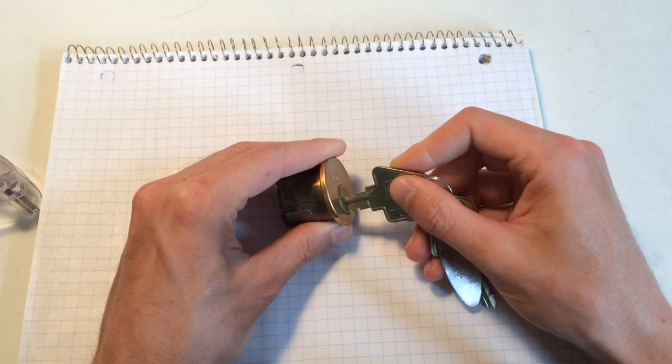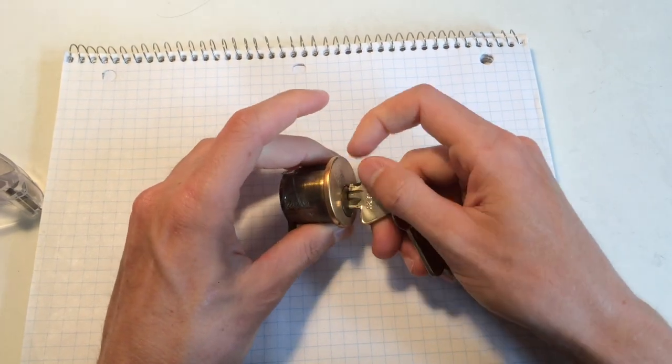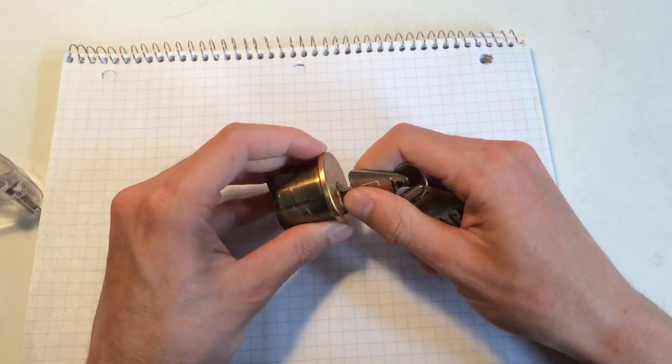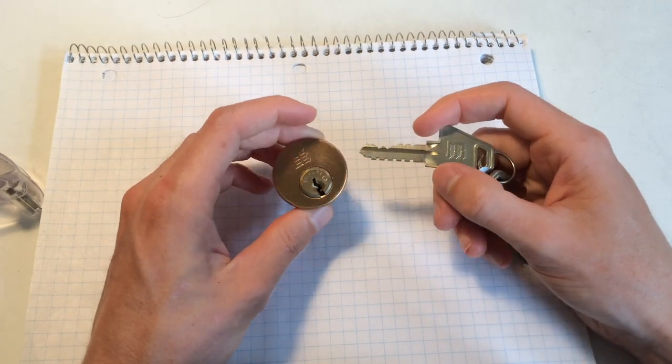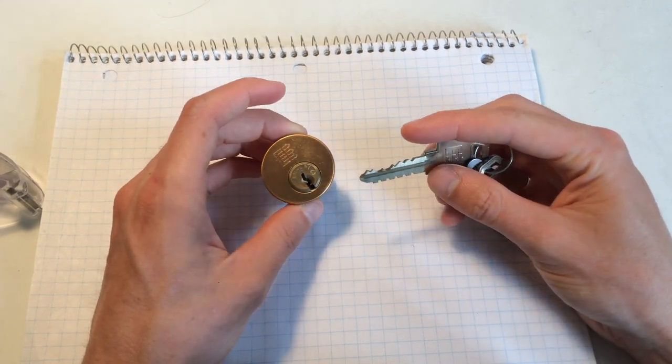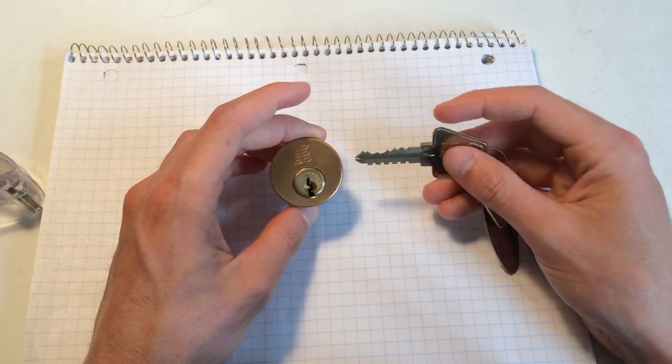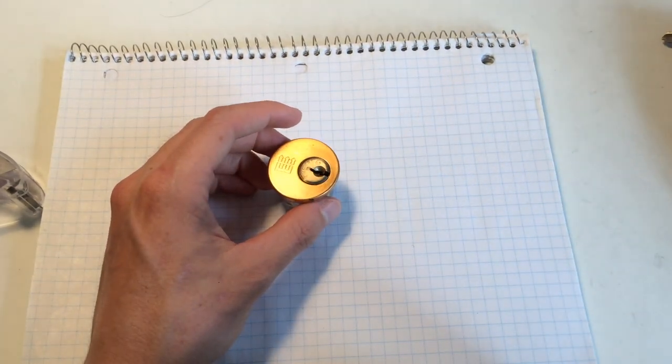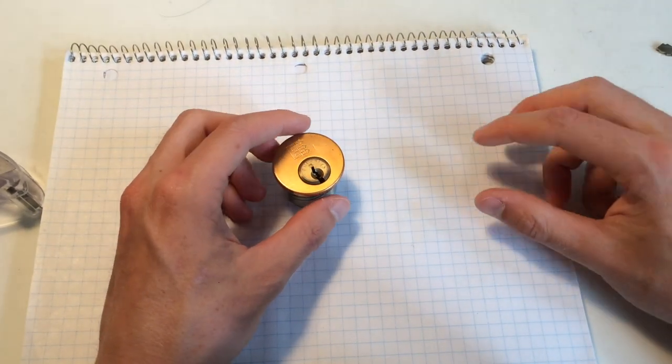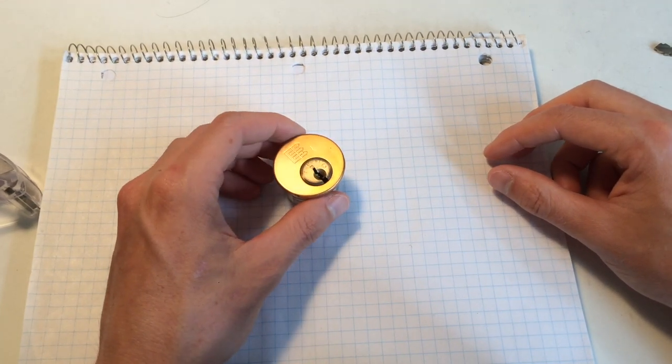When people try to pick this lock, they will encounter two major difficulties. The first one is the feedback. The feedback can sometimes be really hard to feel, sometimes almost non-existent. And the second difficulty is, of course, rotating the pins to the correct orientation.